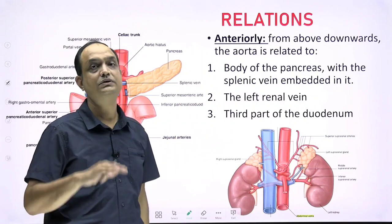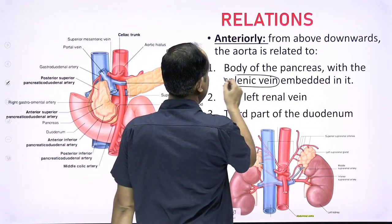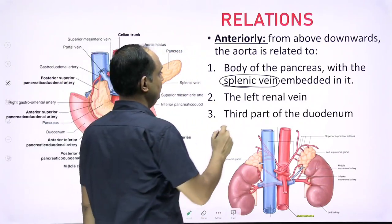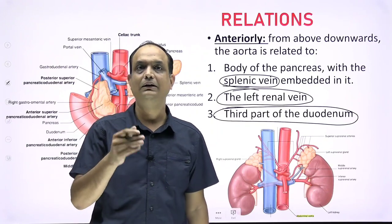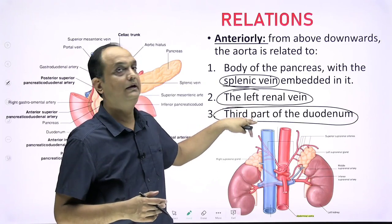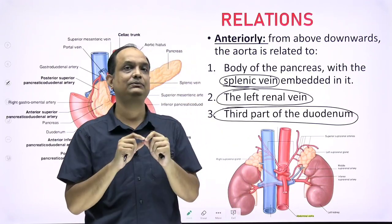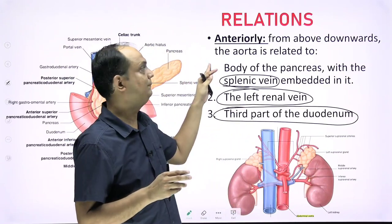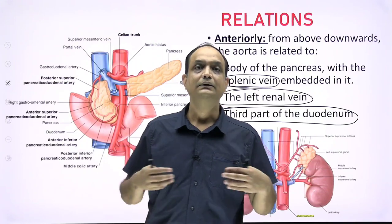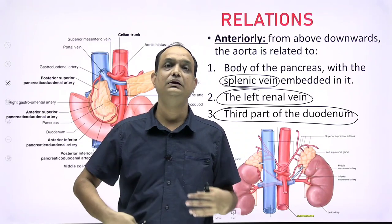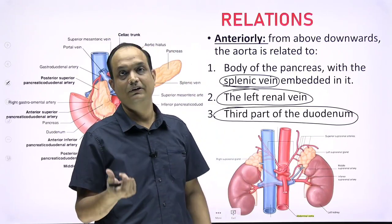From above downward, the organs covering the anterior side of the aorta are: first, the body of the pancreas with the splenic vein embedded inside it; second, the left renal vein; and third, the third part of the duodenum. These are also retroperitoneal structures, so they directly contact the abdominal aorta. To approach the aorta from the anterior side, you must remove intestinal loops and the posterior peritoneum.